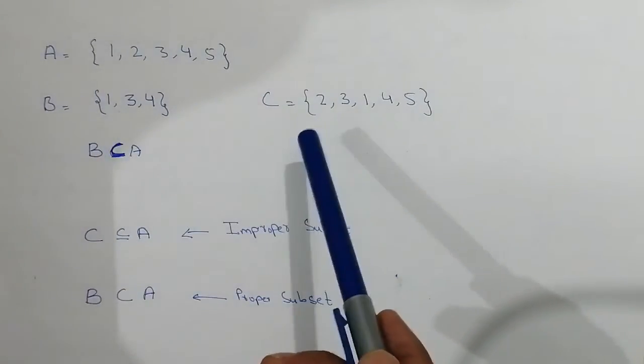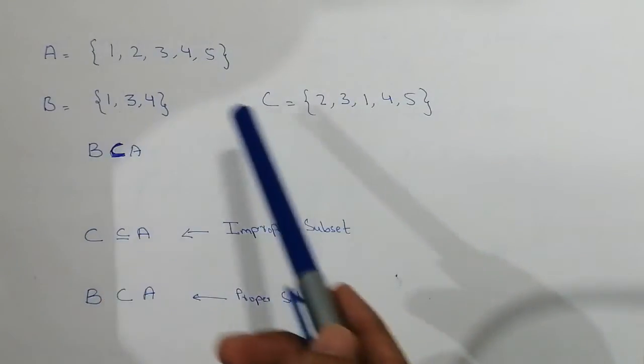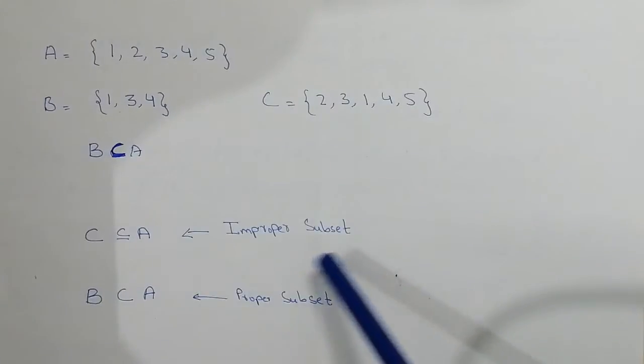Although the arrangement of numbers can be different, both the sets are equal. So it is the improper subset.